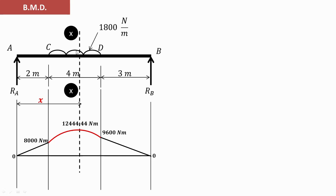The bending moment values are: at A and B it is zero, at C it is 8000 newton-meter, at section XX it is 12444.44 newton-meter, and at D it is 9600 newton-meter. Between C and D there is a UDL, so the bending moment follows a parabolic (second-degree) distribution. Between A and C, and between D and B, it is a straight line. This completes the shear force and bending moment diagram for a simply supported beam carrying a uniformly distributed load.